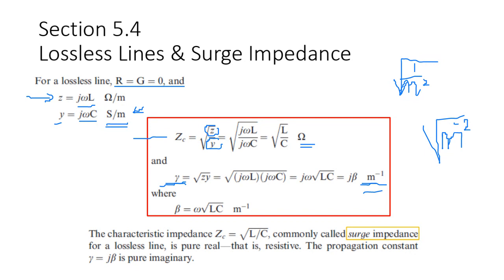The propagation constant is per meter. Because we neglected R and G, the resistance and conductance, therefore we have only inductance and capacitance. So the propagation constant is J beta instead of alpha plus J beta — just the imaginary part. Remember, we always say you cannot neglect X in the transmission line. We can neglect R — no problem. X is higher than R in transmission lines, usually about five to ten times. So we can neglect R, and that's why we are simplifying the circuit.